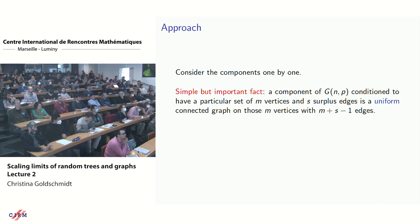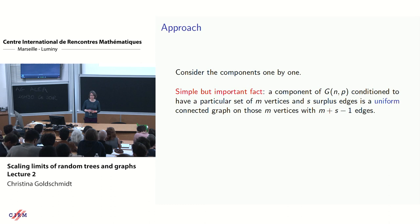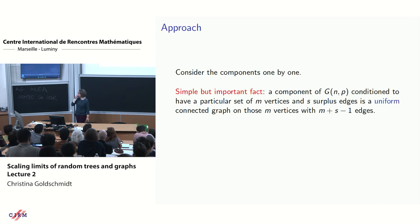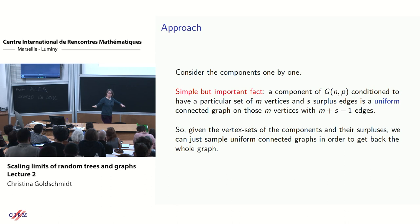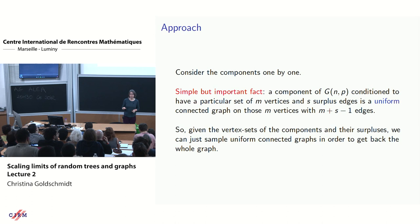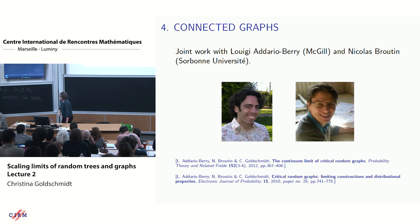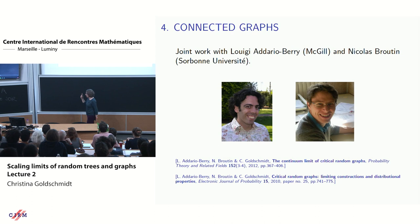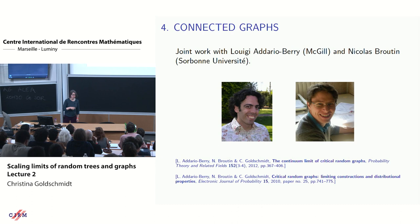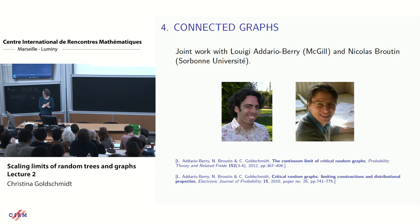A simple but important fact: a component of the Erdős–Rényi random graph conditioned to have a particular set of m vertices and s surplus edges is simply a uniform random connected graph on those m vertices with m + s − 1 edges. This is joint work with Louigi Addario-Berry and Nicolas Broutin. Given vertex sets of components and their surpluses, we can resample the rest of the graph.